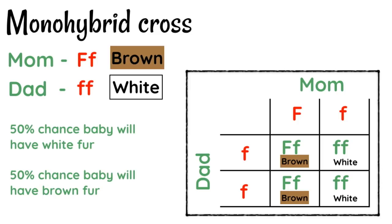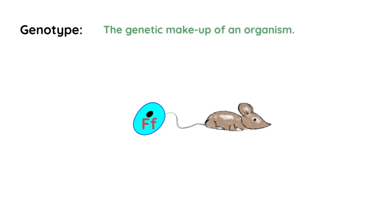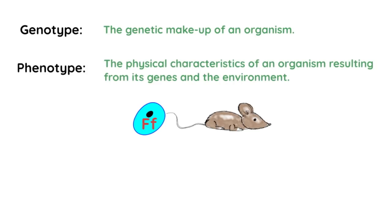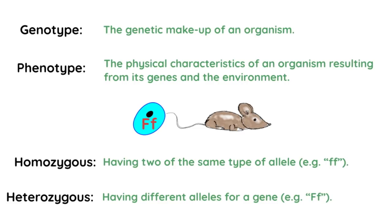There is some important vocabulary that goes with this. The word genotype describes the genetic makeup of an organism — in this case, capital F, lowercase f is the genotype. The phenotype is the physical characteristics of an organism that result from the genotype, and it's also influenced by environmental factors. Homozygous describes having two of the same type of allele, for example two lowercase f alleles. Heterozygous describes having different alleles for a gene — so capital F, lowercase f is heterozygous.